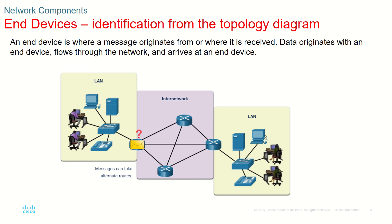Data originates with an end device, flows through the network — which can be an internet network of routers — and then arrives at another end device.